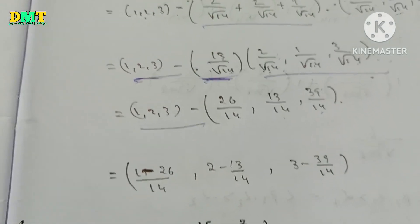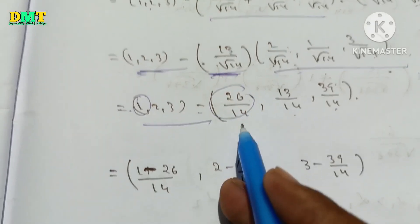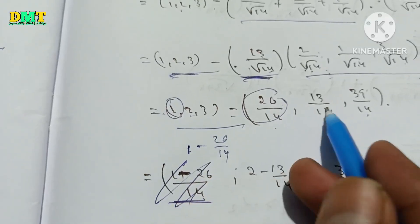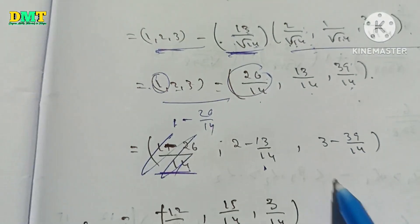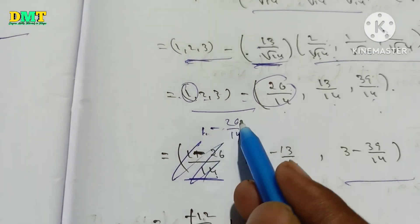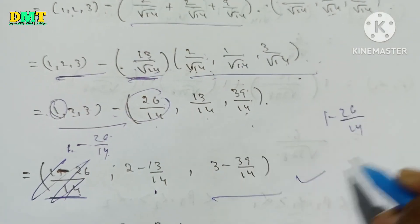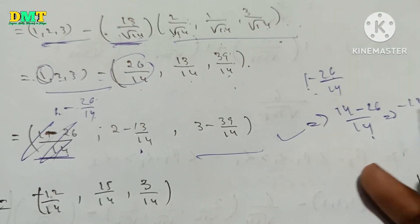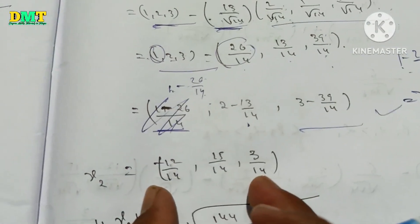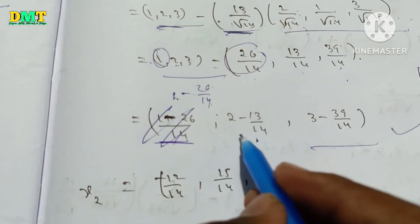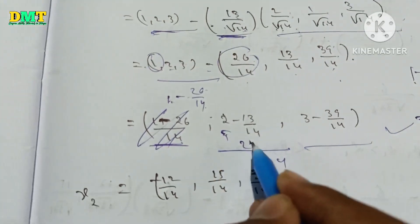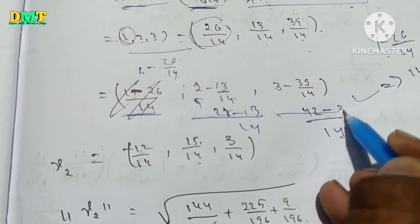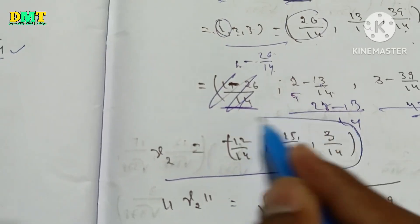Now we will attribute the first value. 1 minus 26/14, comma 2 minus 13/14, comma 3 minus 13/14. If we multiply by LCM 14: 14 minus 26 is minus 12, so minus 12/14. 14 times 2 is 28 minus 13 is 15, so 15/14. 14 times 3 is 42 minus 13 is 29... so this is how you write gamma2 value.